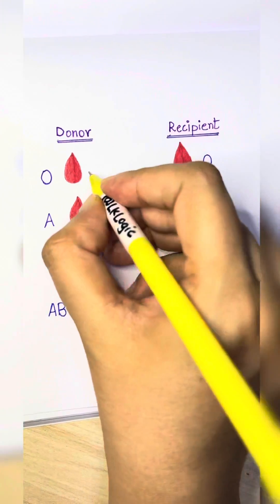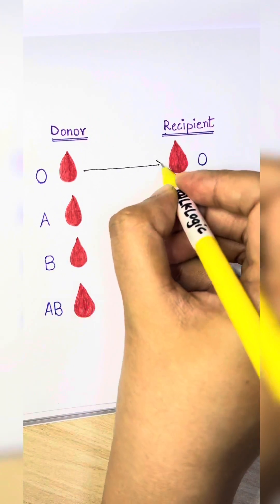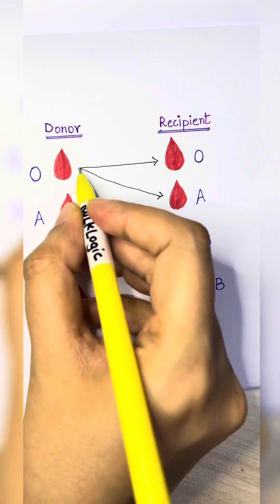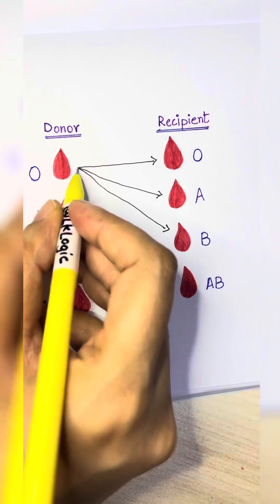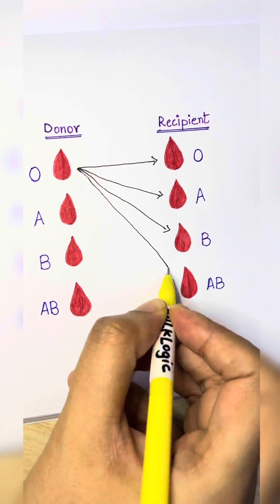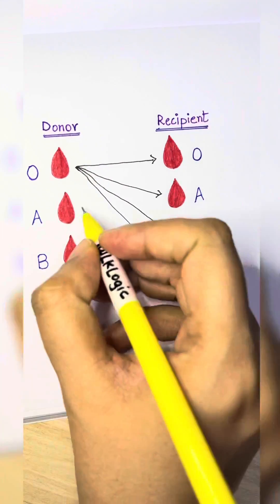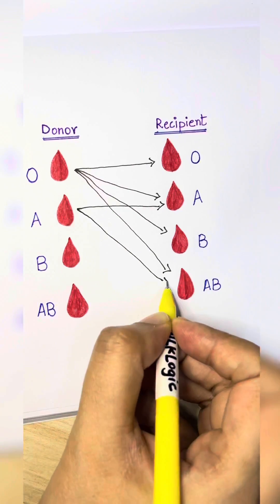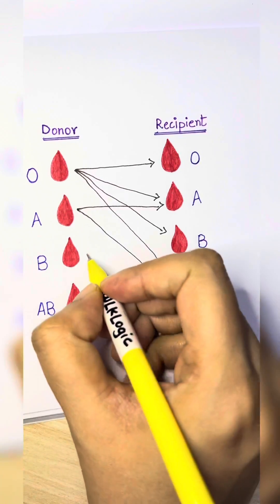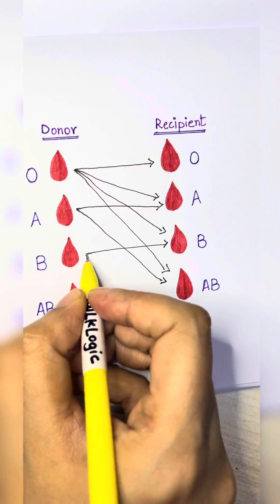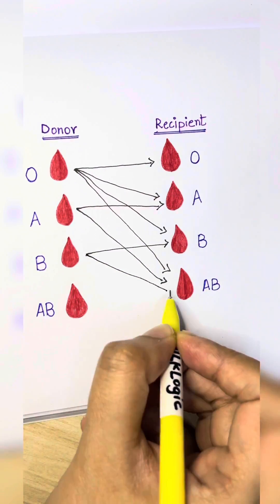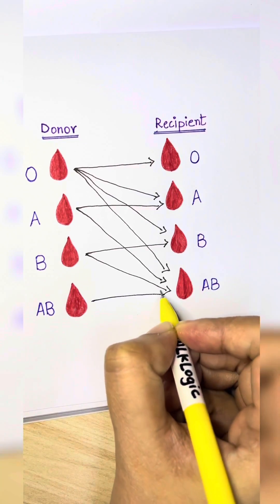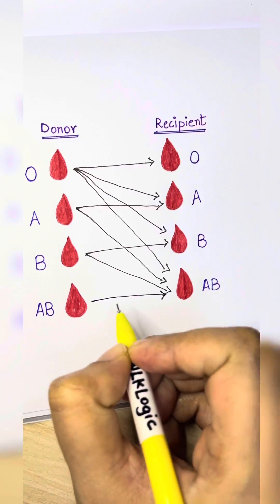Universal donor O can donate blood to O, A, B, and AB. A can donate to A and AB. B can donate to B and AB. AB can donate to AB only, and it is the universal recipient.